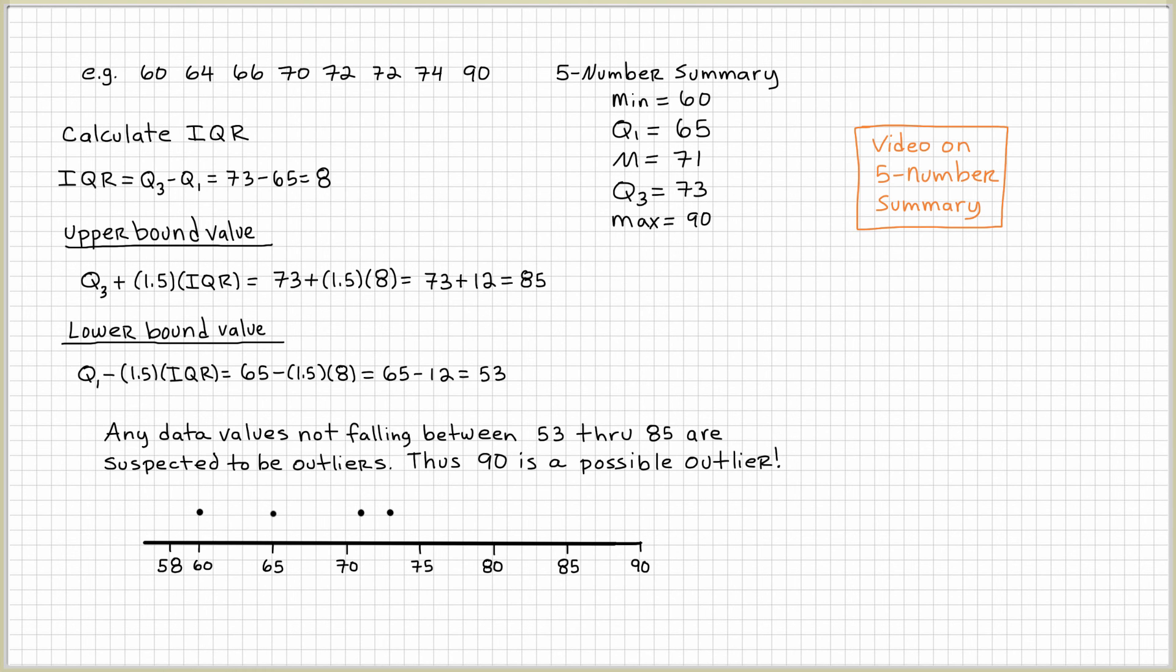And we know we can't use 90 for the max because that's an outlier. So we're going to get rid of that and we're going to consider the next highest, which will be 74. I'm going to put a dot for 74 there, and I'm going to put a star above 90 because that's going to tell everybody there's an outlier here.